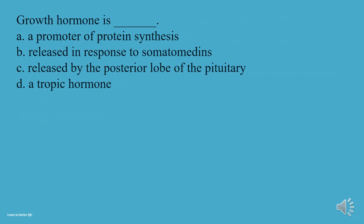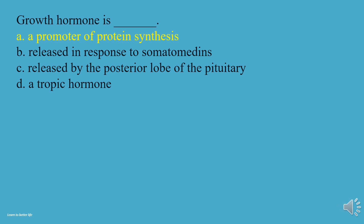Growth hormone is: A, A promoter of protein synthesis. B, Released in response to somatomedins. C, Released by the posterior lobe of the pituitary. D, A tropic hormone. The answer is A, a promoter of protein synthesis.